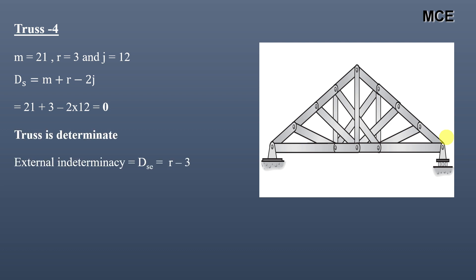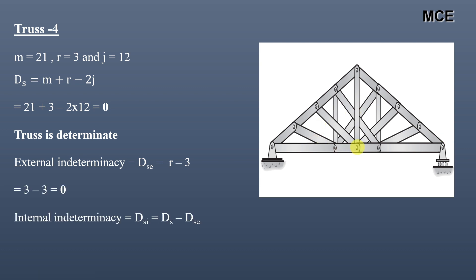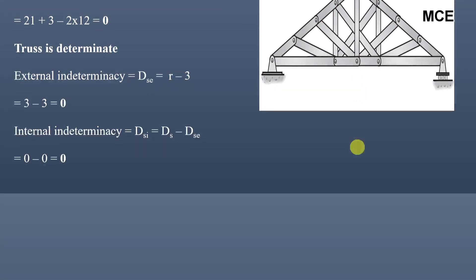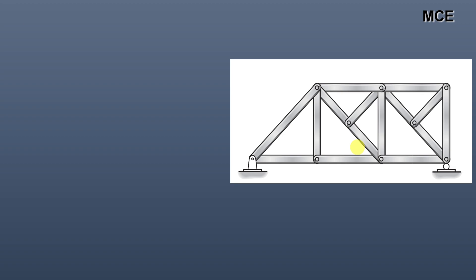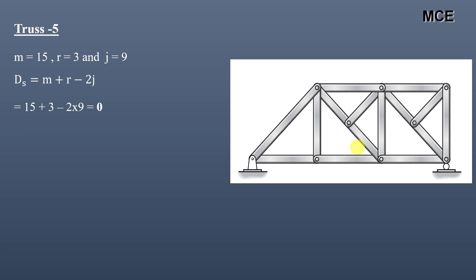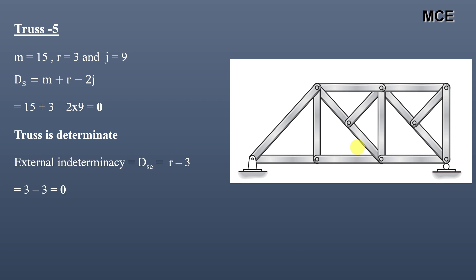For truss four, ds = 0, meaning the truss is determinate. External indeterminacy equals number of reactions minus 3, which is 0, and internal indeterminacy is also 0. For truss five, this truss has 15 members, 3 reactions, and 9 joints. Again ds = 0 — truss is determinate, with both external and internal indeterminacy equal to zero.